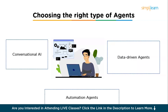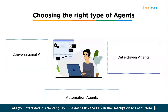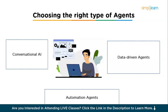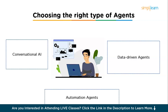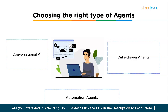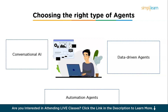Automation agents automate repetitive, rule-based tasks to make work more efficient and reduce human error. They focus on streamlining operations rather than interacting with users. Use cases include scheduling — AI agents that automatically schedule meetings based on calendars and preferences — data entry tasks like filling out forms or updating databases, and workflow management by routing tasks across different systems. Choose automation agents for back-office applications or to optimize repetitive workflows.